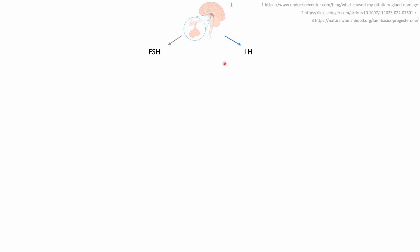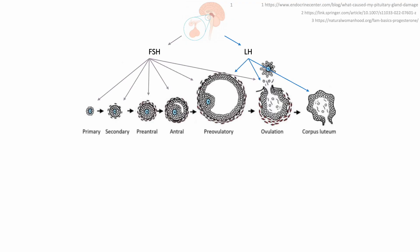The anterior hypothalamus signals to the pituitary gland at the start of puberty to start producing gonadotropins, FSH and LH. The job of FSH is to stimulate the growth, development, and maturation of ovarian follicles from primordial follicles into primary, secondary, preantral, antral, and preovulatory follicles. LH, in turn, triggers ovulation and further promotes the development of follicles as well.